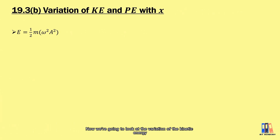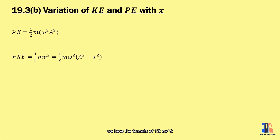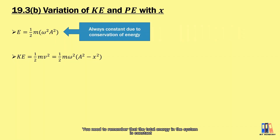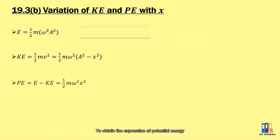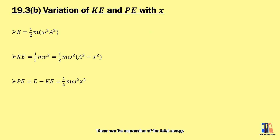Now let's look at the variations of kinetic energy and potential energy with displacement. The total energy is ½mω²a². For kinetic energy, using the formula ½mv² and substituting the velocity expression, we obtain KE = ½mω²(a² − x²). The total energy is constant due to conservation of energy. To get the potential energy in terms of displacement, we take total energy minus kinetic energy, which gives PE = ½mω²x².